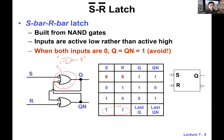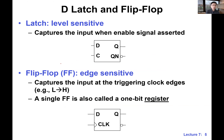We can use S-bar R-bar latch or SR latch to build a D latch. With D latch, we have something called a level-sensitive device. By 'level,' I'm talking about the level of the clock — is it high or low? When we say D latch, we usually mean: when C is high, the D latch is open and accepting input. This relates to the exercise we just did — some of you were thinking about the D latch, not the D flip-flop, which is why you answered true.